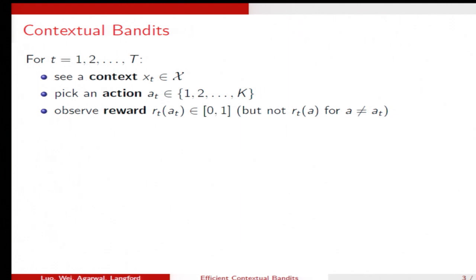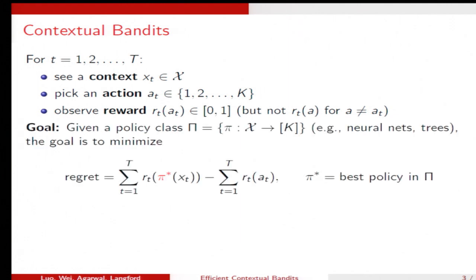And then observe the reward of that action, but not the other action's reward. And the goal is to compete with a policy class, which consists of a lot of mappings from context to actions. Examples are neural networks or trees.